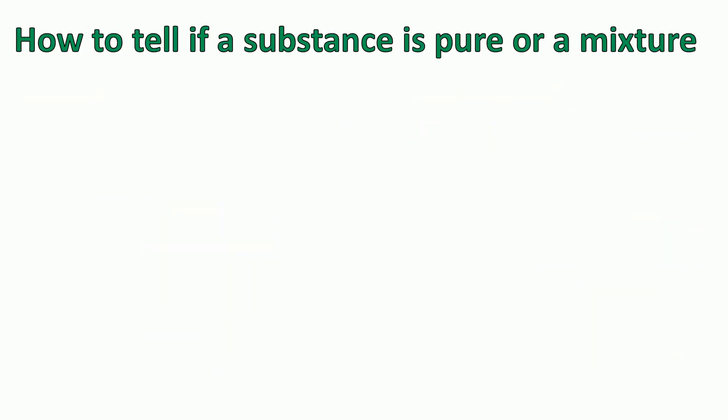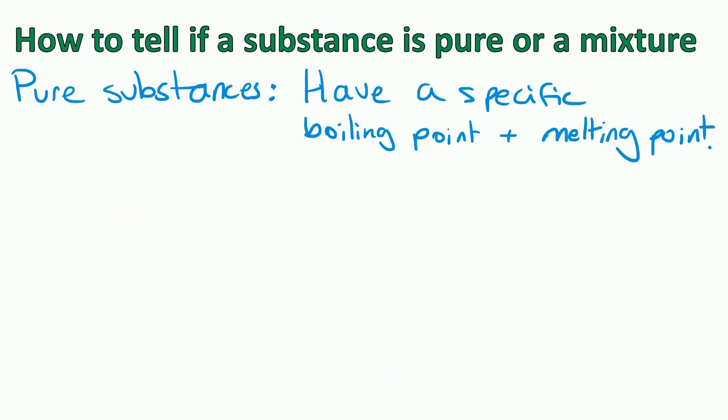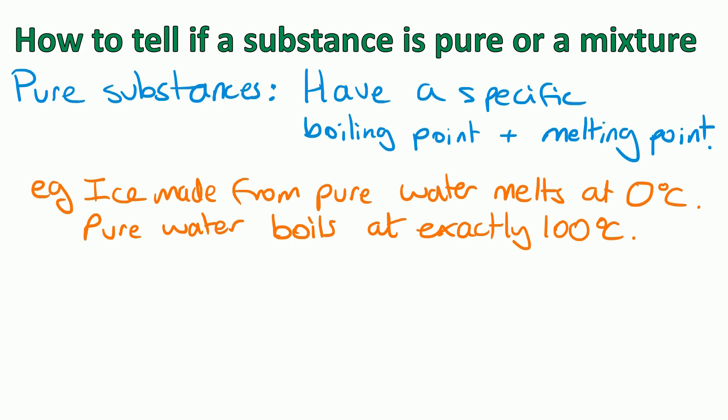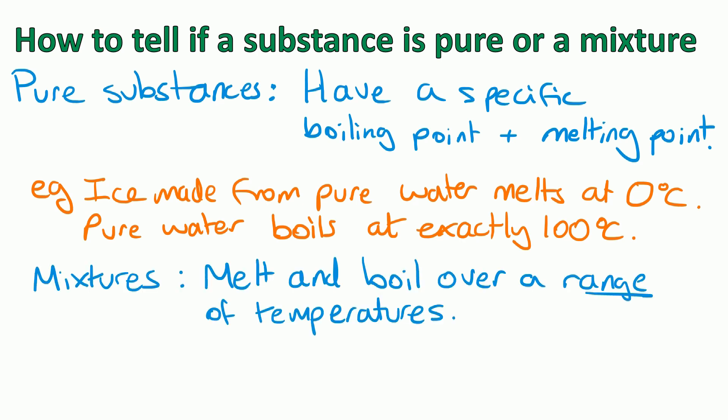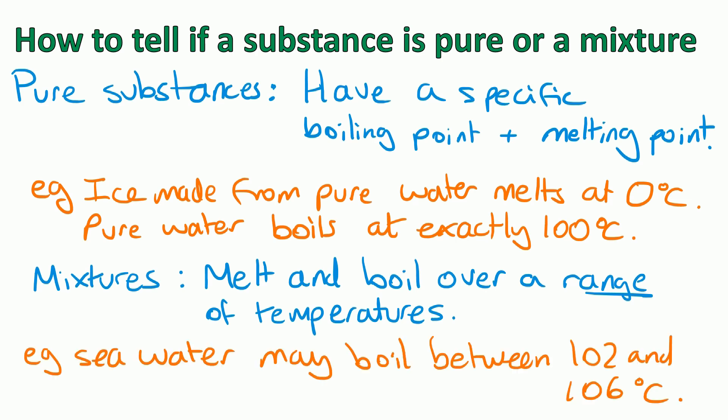So how do you tell if a substance is pure or a mixture? A pure substance has a specific boiling point and melting point. For example, ice made from pure water melts at exactly zero degrees C, and pure water boils at exactly 100 degrees C. Mixtures, on the other hand, melt and boil over a range of temperatures — for example, seawater may boil between 102 and 106 degrees.